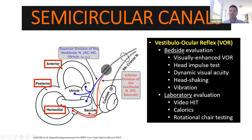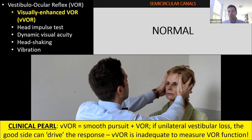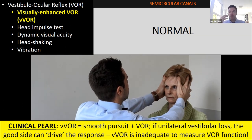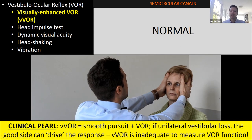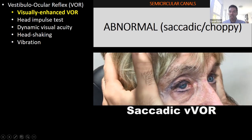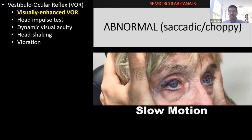Now, the semicircular canals. We'll talk about the visually enhanced VOR, head impulse, dynamic visual acuity, head shaking, and vibration — not laboratory evaluation. The visually enhanced VOR is too slow to isolate the VOR; it uses the pursuit system. If the patient has vestibular neuritis on the right side, the good left side can drive the response because the stimulus is low frequency. This isn't adequate to measure VOR function — the head impulse is what we need next.